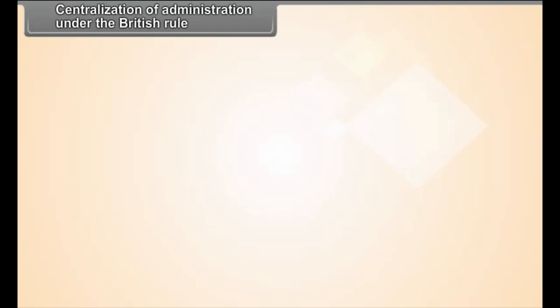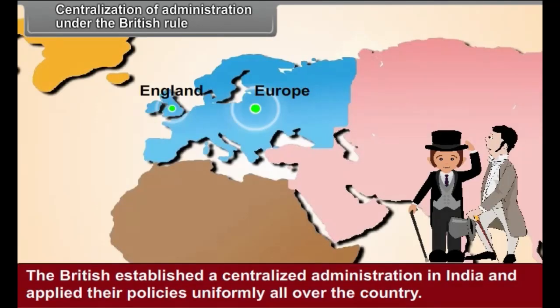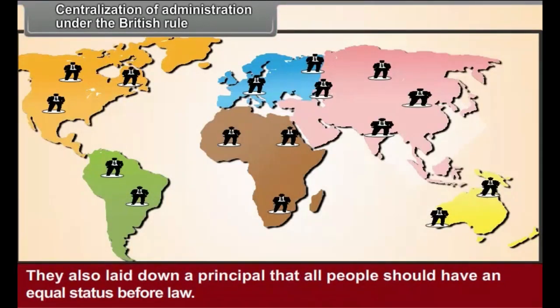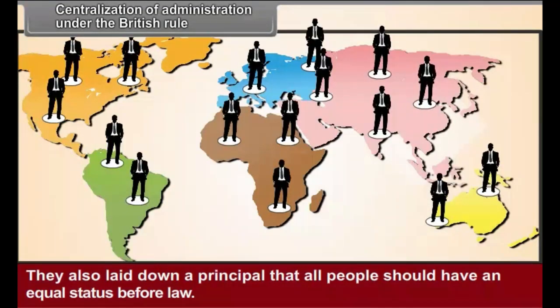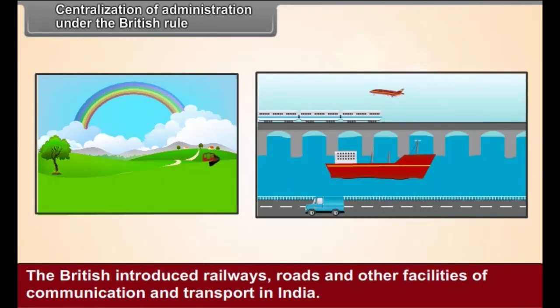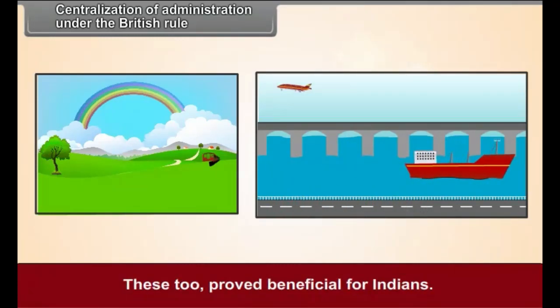Centralization of Administration Under British Rule: The British established a centralized administration in India and applied their policies uniformly all over the country. They also laid down a principle that all people should have an equal status before law. The British introduced railways, roads and other facilities of communication and transport in India. These proved beneficial for Indians, as Indians living in different provinces came into more contact with one another, leading to the development of a national feeling among them.